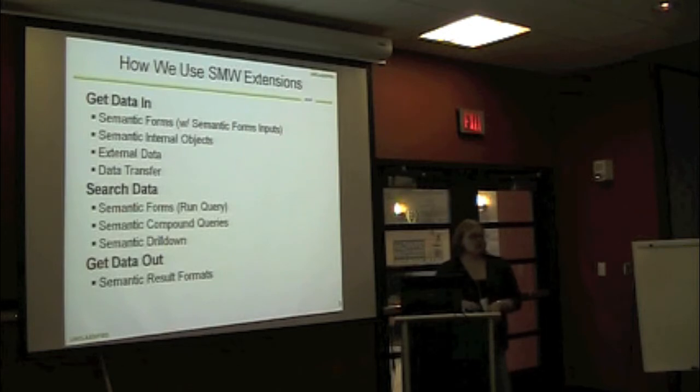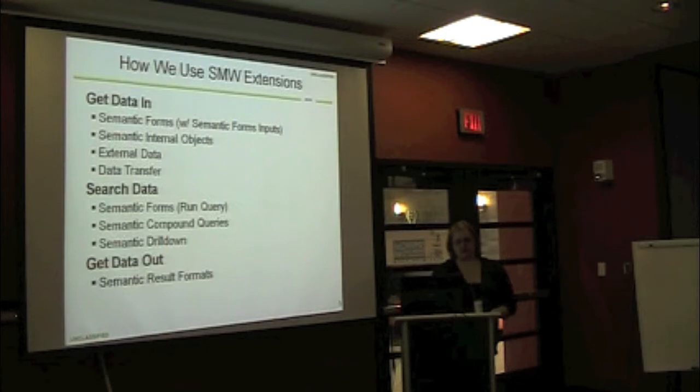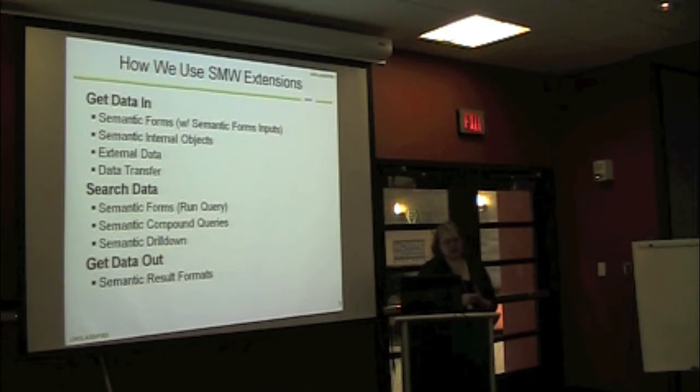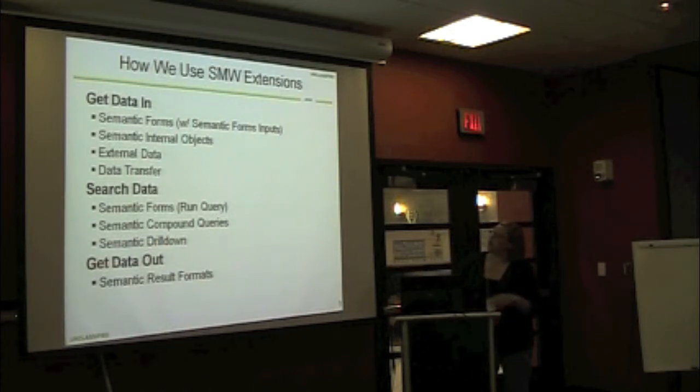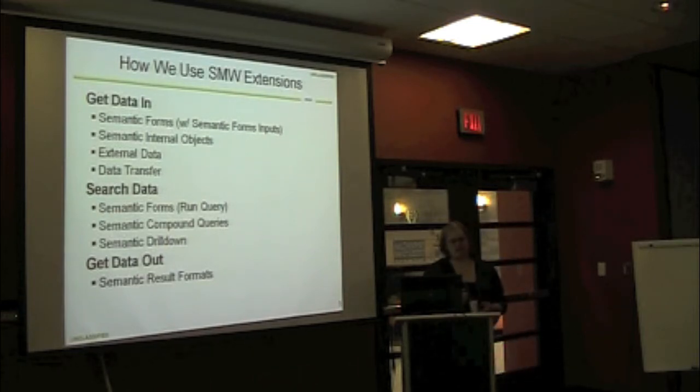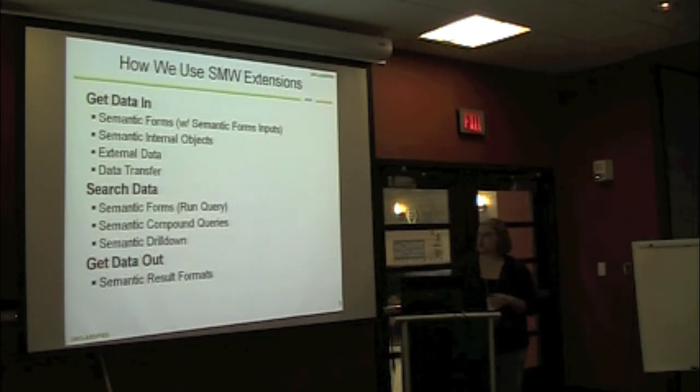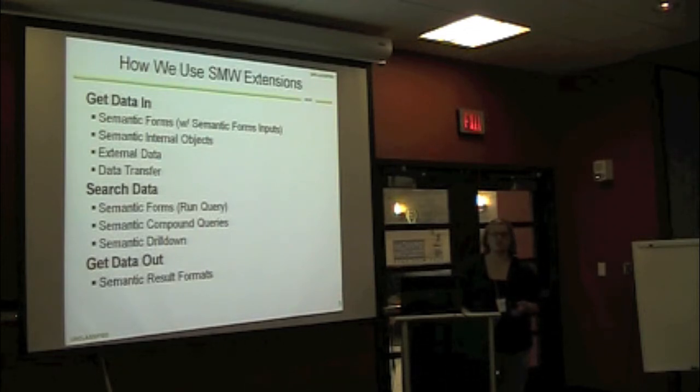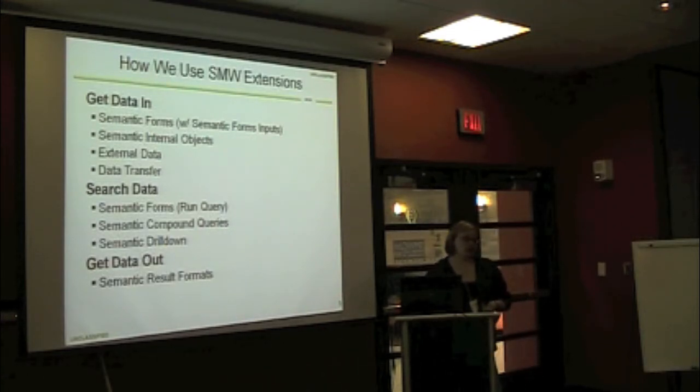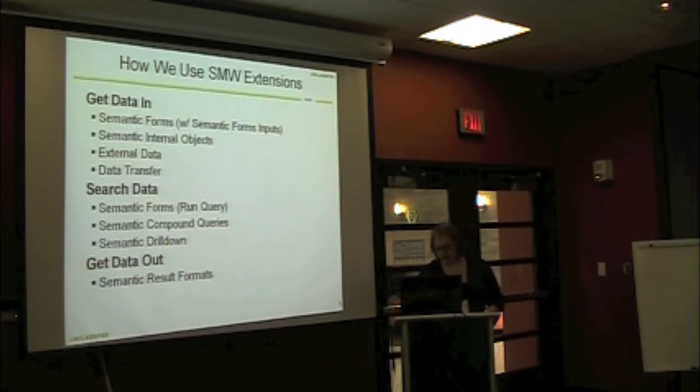So some of the ways that we use Semantic MediaWiki in the bundle of extensions: we get data in, we search data, and we get data out. This is just a brief overview of the way that we use the different Semantic Extensions—forms, forms input to get data in, internal objects, external data, data transfer, and searching the data. We use the run query function as well as compound queries and semantic drill down. To get it out, we use specifically a lot of the time the CSV export for semantic results formats as well as maps and other things like that.